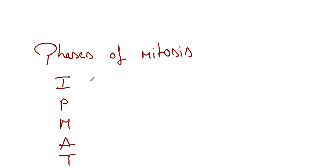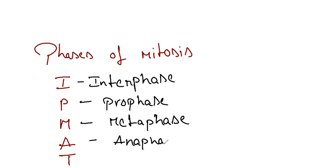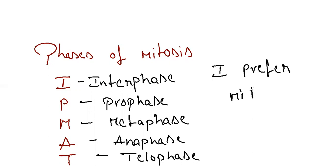So I will tell you a very easy mnemonic for this. I for interphase, P for prophase, M for metaphase, A for anaphase, and T for telophase. The very easiest mnemonic for this is: 'I prefer milk and tea.' I prefer milk and tea — so like that you can remember this.